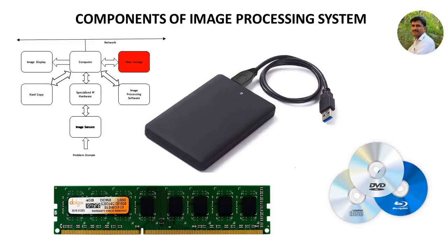The next is mass storage devices. Storage of digital images for processing purposes falls into three categories. The first one is short-term storage, which is used during processing. Here, the images are stored either in computer memory, especially in RAM, or on specialized boards called frame buffers. The second category is online storage for relatively fast and frequent recall of images. Here, the images are stored in the hard disk of the computer.